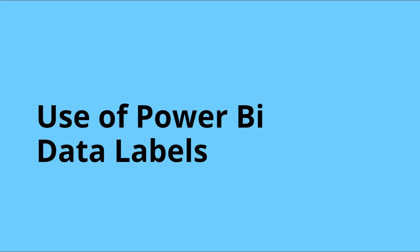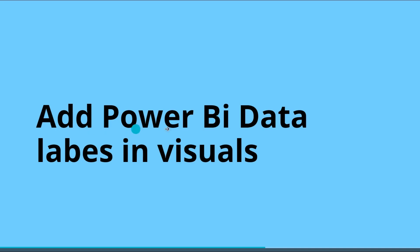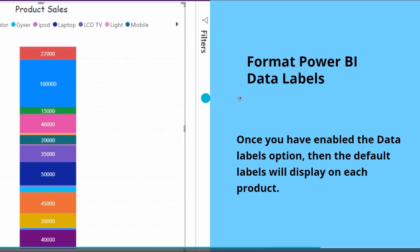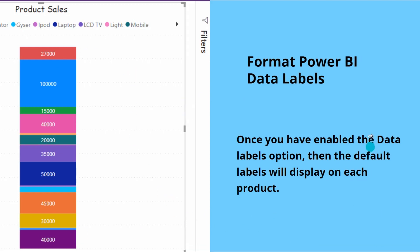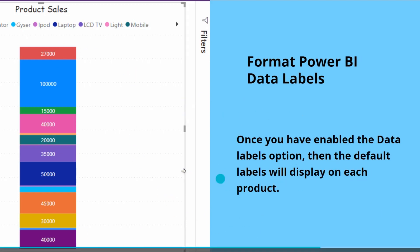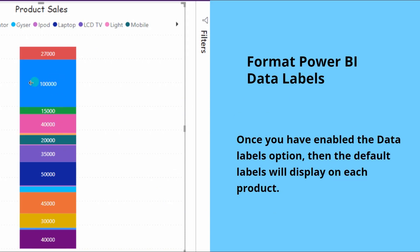I will show you practically how to enable the data labels option. After that we will see how to add Power BI data labels in visuals, and when we format them, this is how it looks. When we enable the data label option, by default it displays the sales value of each product.